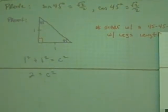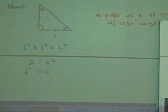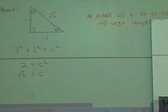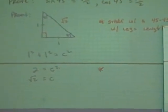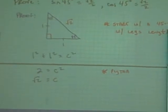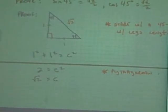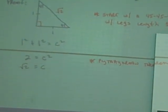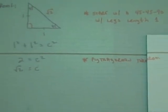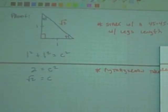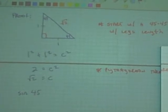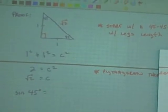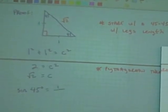What's the hypotenuse equal? Square root of 2. So now that you have that triangle set up, it wants to start at 45 degrees. How do you find sine? Opposite over hypotenuse.